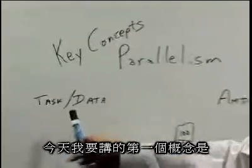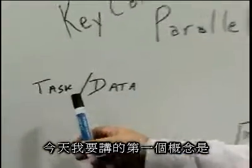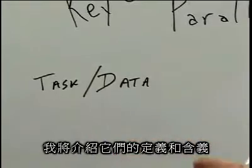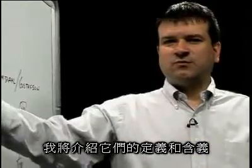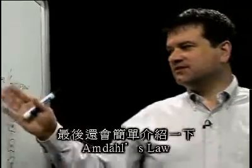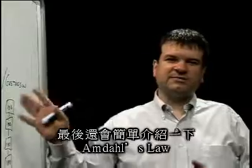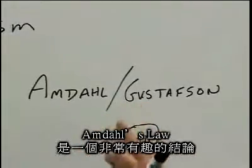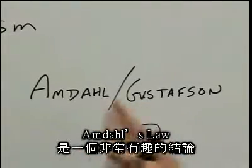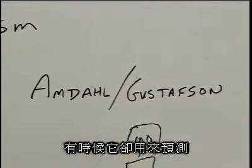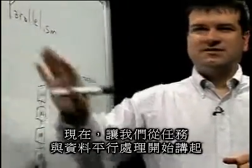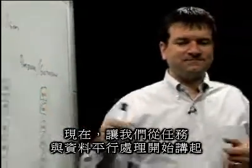The first one I'll go over today is task and data parallelism — what are they and what do they mean? And then I'll finish with talking a bit about Amdahl's Law. Amdahl's Law is a very interesting observation, but sometimes it's used to predict things that simply don't make sense, so I'm going to talk about those. Let's start with task and data parallelism.